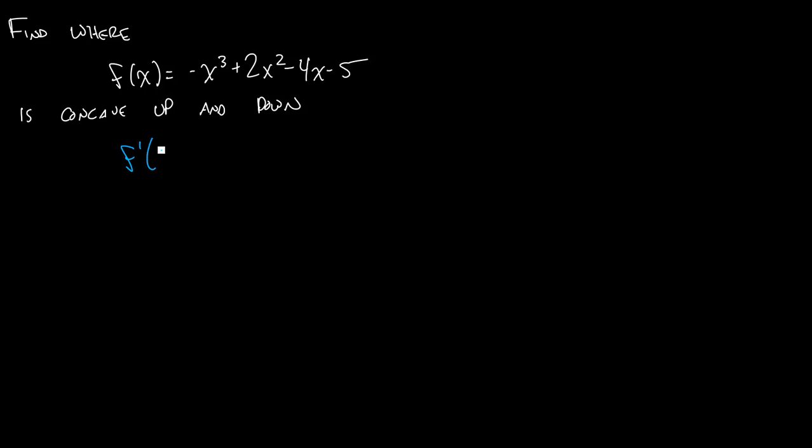We want to think about f double prime. So we'll start by finding f prime of x and we'll get negative 3x squared plus 4x minus 4, and then we'll find f double prime of x and here we'll have negative 6x plus 4.